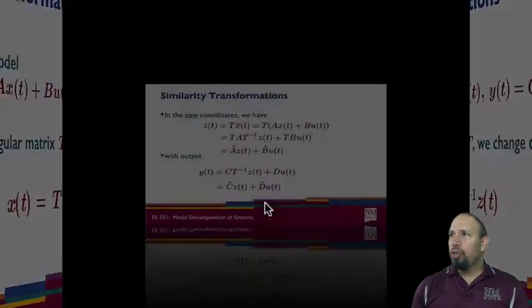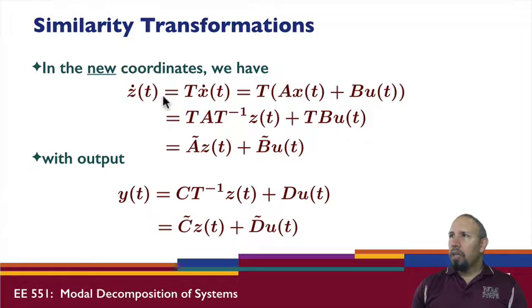We can show that z dot now equals T times x dot. Since x dot equals Ax plus Bu, I distribute my T through and keep track that x equals T inverse z. In this process, I end up with the new A and B: A tilde equals TAT inverse, B tilde equals TB. We now have the state equation in the new coordinates.